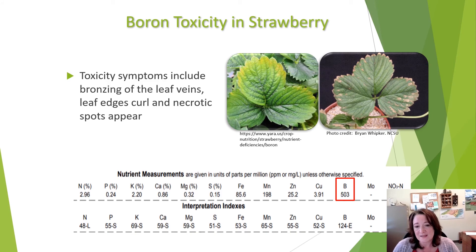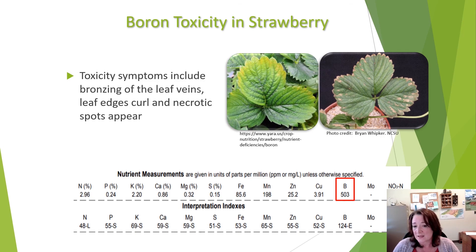Boron toxicity is almost as common in North Carolina as boron deficiency. It appears initially as bronzing of the leaf, as shown in the picture on the right, then progresses to necrotic spotting around the edges and leaf curling, as shown in the picture on the far right. In this example report, the boron level is about 500 parts per million, which is roughly 10 times the sufficiency level. Boron becomes toxic in plants as concentrations approach 200 parts per million. When boron toxicity occurs, there is very little that can be done to correct it except wait and see, so be very careful with boron applications.